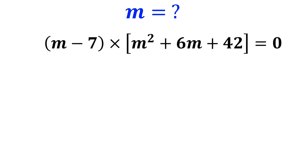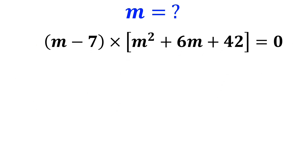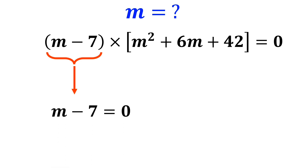Now, we have two expressions that we must set equal to zero. First, we set m minus 7 equal to zero, so the first solution is m equals seven.